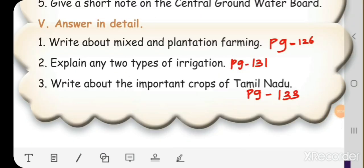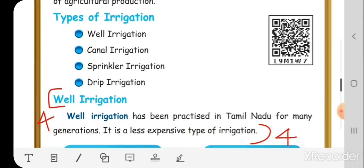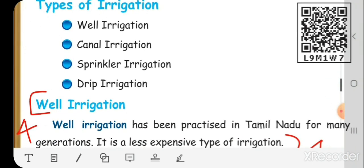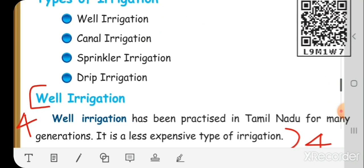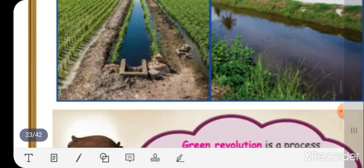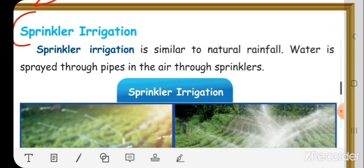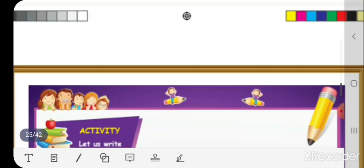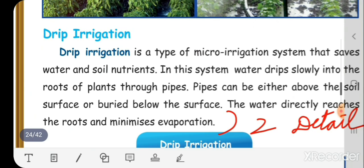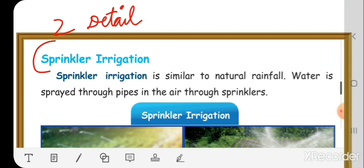Second question: Explain any two types of irrigation. Page number 131 has the answer. See children, we have different types of irrigation: well irrigation, canal irrigation, sprinkler irrigation, and drip irrigation. You have to explain any two types. You can explain well irrigation and sprinkler irrigation, or drip irrigation. So let me show you sprinkler irrigation.